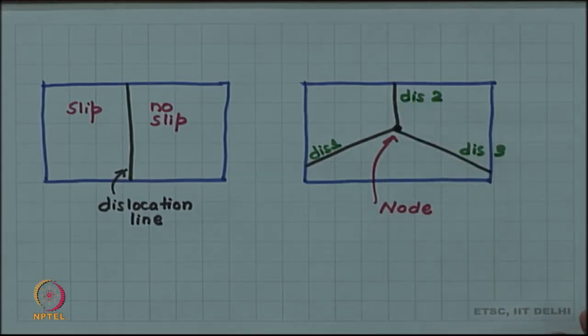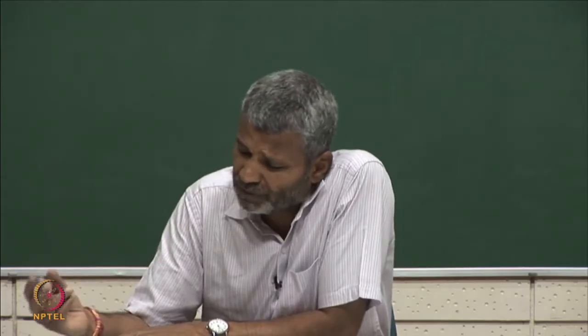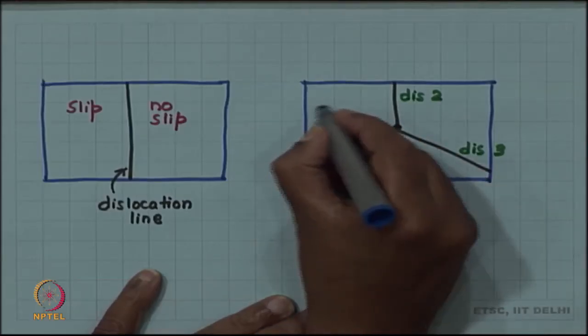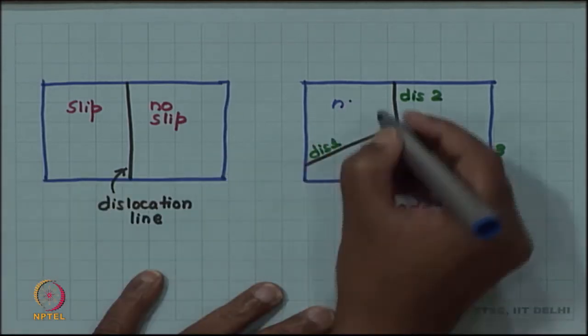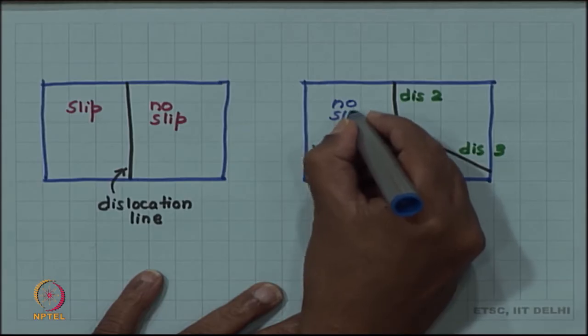This possibility is also there and in that case we get such point junction point which are called node. We can call one of these regions as a no slip region.